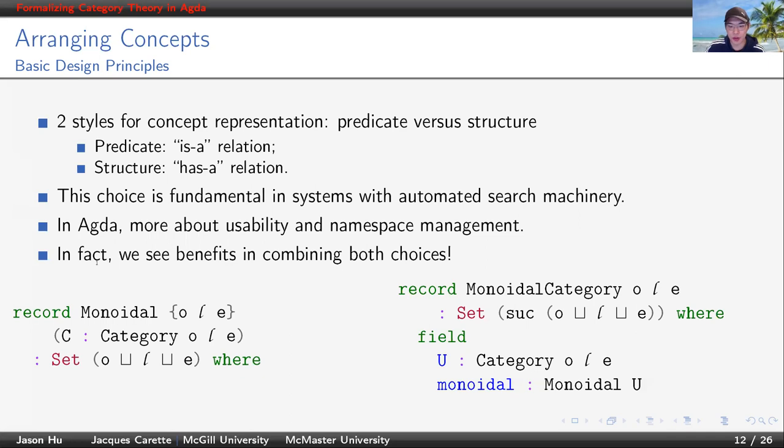Here we have two styles of monoidal categories in our library. The one on the left is in predicate style. It says that a category is monoidal. The one on the right is in structure style. It says it represents some underlying category U, along with a proof of it being monoidal.